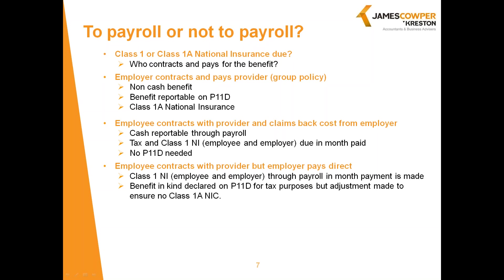Remember that when completing the P11D, private medical insurance attracts Class 1A National Insurance, so you have to put an adjustment to reduce the Class 1A NI in Section 4 Box C of the P11D(b), or enter the benefit in Section M under items that don't attract Class 1A National Insurance. If you've got an item with both business and private use — such as a home telephone where Rob can quantify his business calls — then only the private proportion should go through the payroll, as the business calls element would be covered by the exemption.